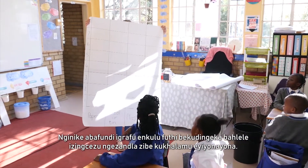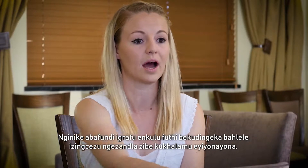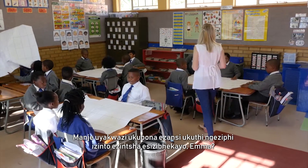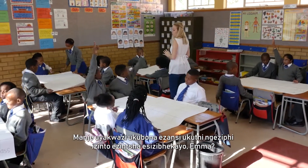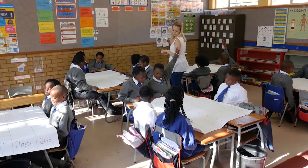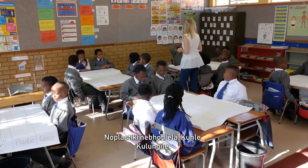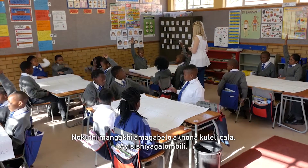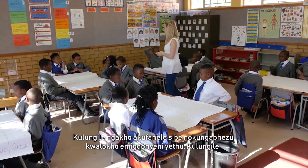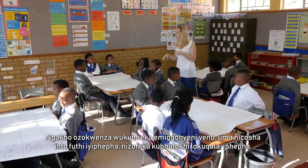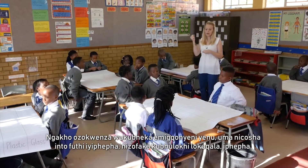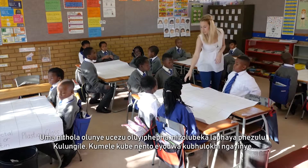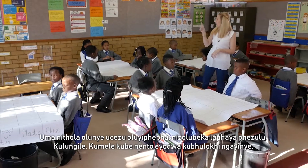I gave the learners a big graph and they had to physically organize the pieces into the correct column. At the bottom you can see the different items we are looking for: paper, metal, wooden, plastic and glass. There are eight bars on the side, so we shouldn't have more than that in our dustbins. If you pick up something and it's paper, you're going to put it in the first block. Only one item per block.